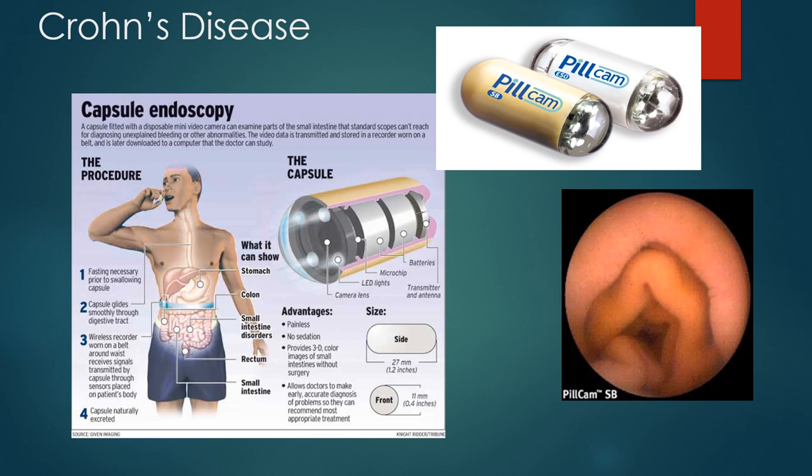The capsule endoscopy is actually a pill camera. The picture in the bottom right shows what that camera is visualizing. This is great for Crohn's disease because it affects mouth to anus — the patient swallows this pill, it makes its way down through the GI tract, and we have a whole video of the entirety of their GI system.